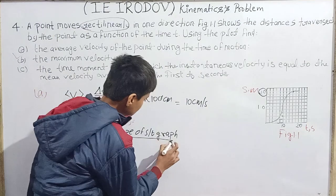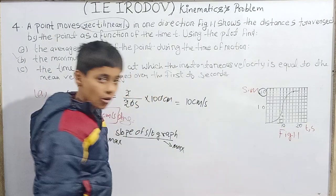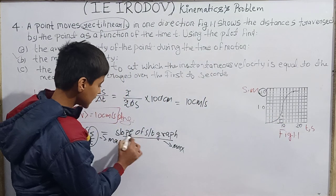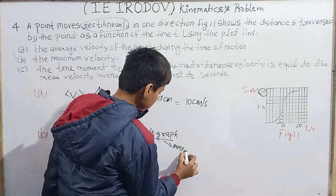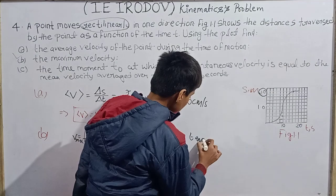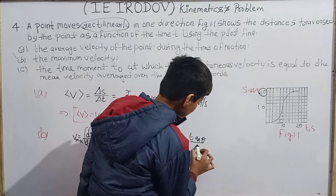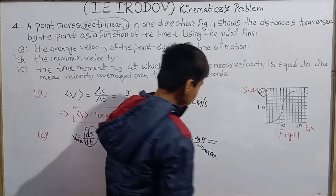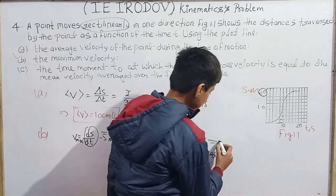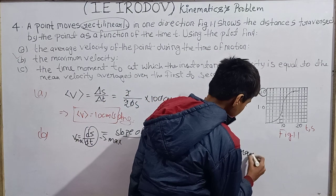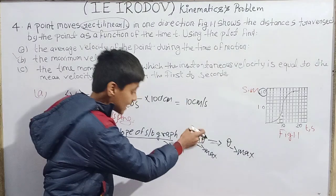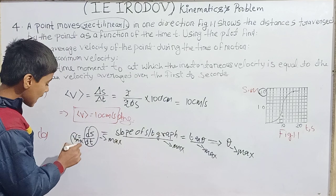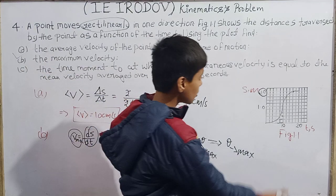To maximize ds/dt, we need to maximize the slope of the graph. The slope equals tan θ, where θ is the angle the tangent makes with the x-axis. So maximizing the slope means maximizing tan θ, which means θ should be maximum. Maximum slope means maximum ds/dt, which means maximum velocity.